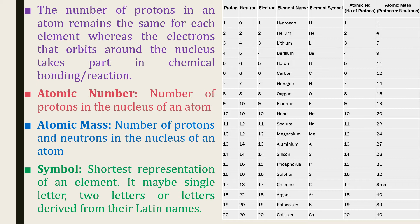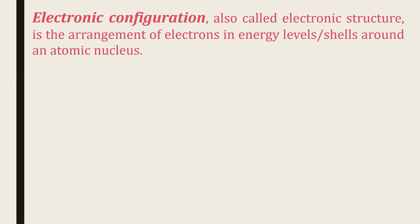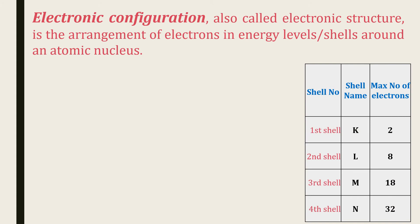So now you are clear with the elements and their symbols, atomic number, and atomic mass. Let's see how electrons are arranged in different shells. This is called electronic configuration, also called the electronic structure — it is the arrangement of electrons in energy levels or shells around the nucleus. The first shell is the K shell, which accommodates a maximum of 2 electrons. The second shell is the L shell, which accommodates a maximum of 8 electrons. The third shell is the M shell, which accommodates a maximum of 18 electrons. The fourth shell is the N shell, which accommodates a maximum of 32 electrons.